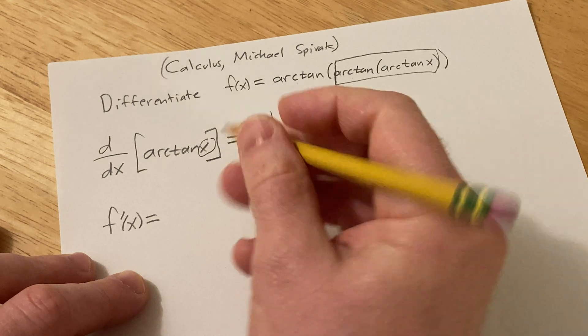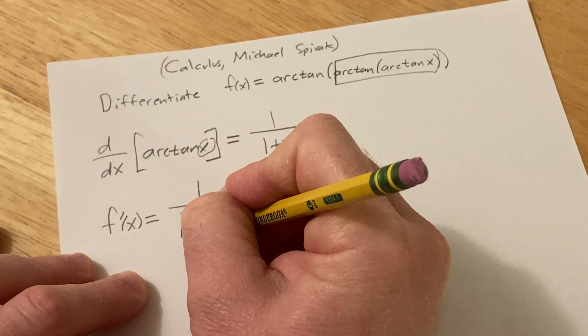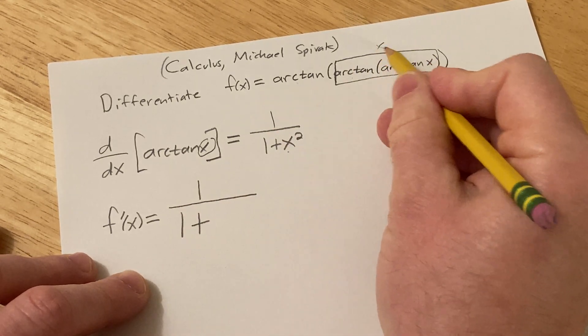So it's basically 1 over 1 plus and then all of this squared instead of your x. That's like your x, right?